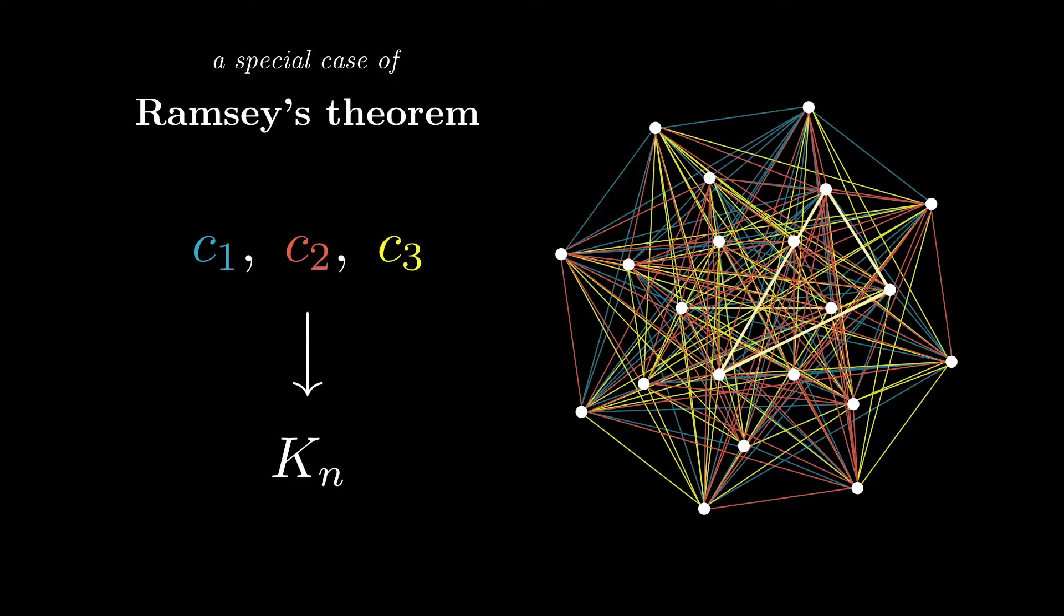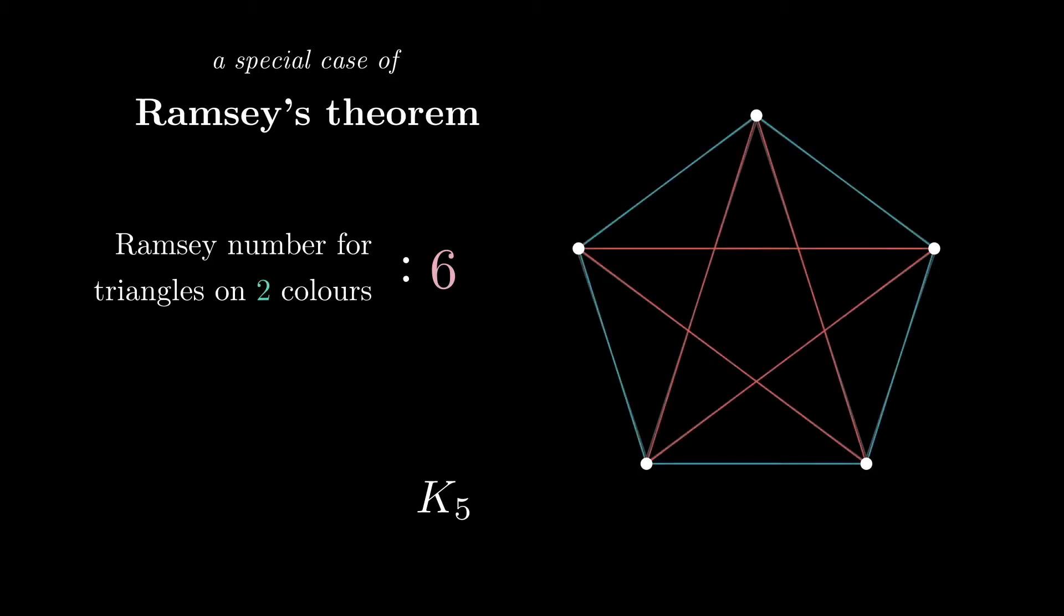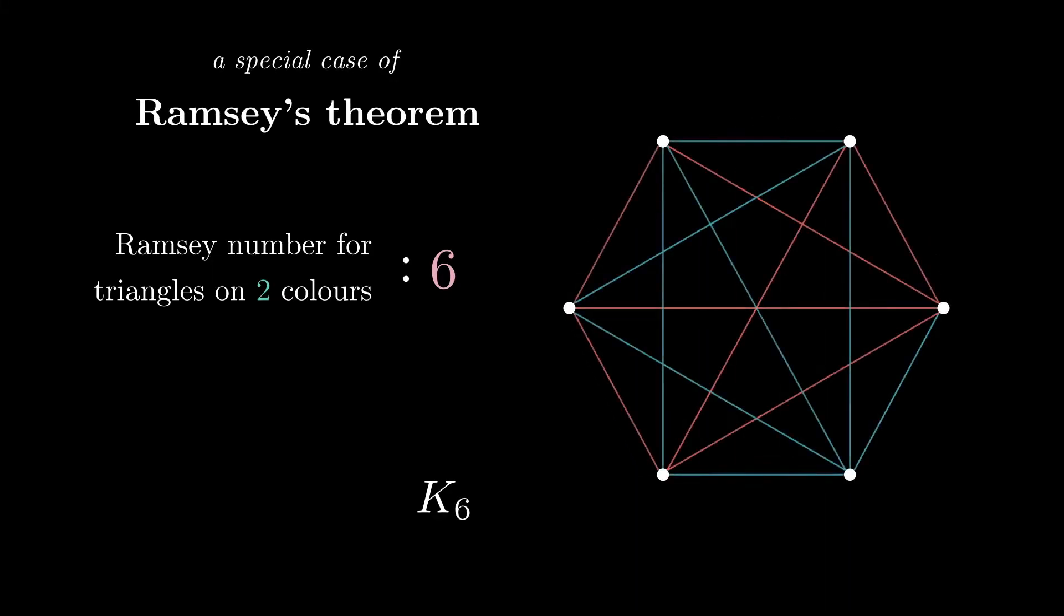Given some number of colours, the threshold beyond which that is true is called a Ramsey number, and finding them is a notoriously difficult problem. With two colours, this threshold is 6. This is because you can colour k5 without monochromatic triangles, but a simple counting argument will show that any attempt at k6 will inevitably contain one.